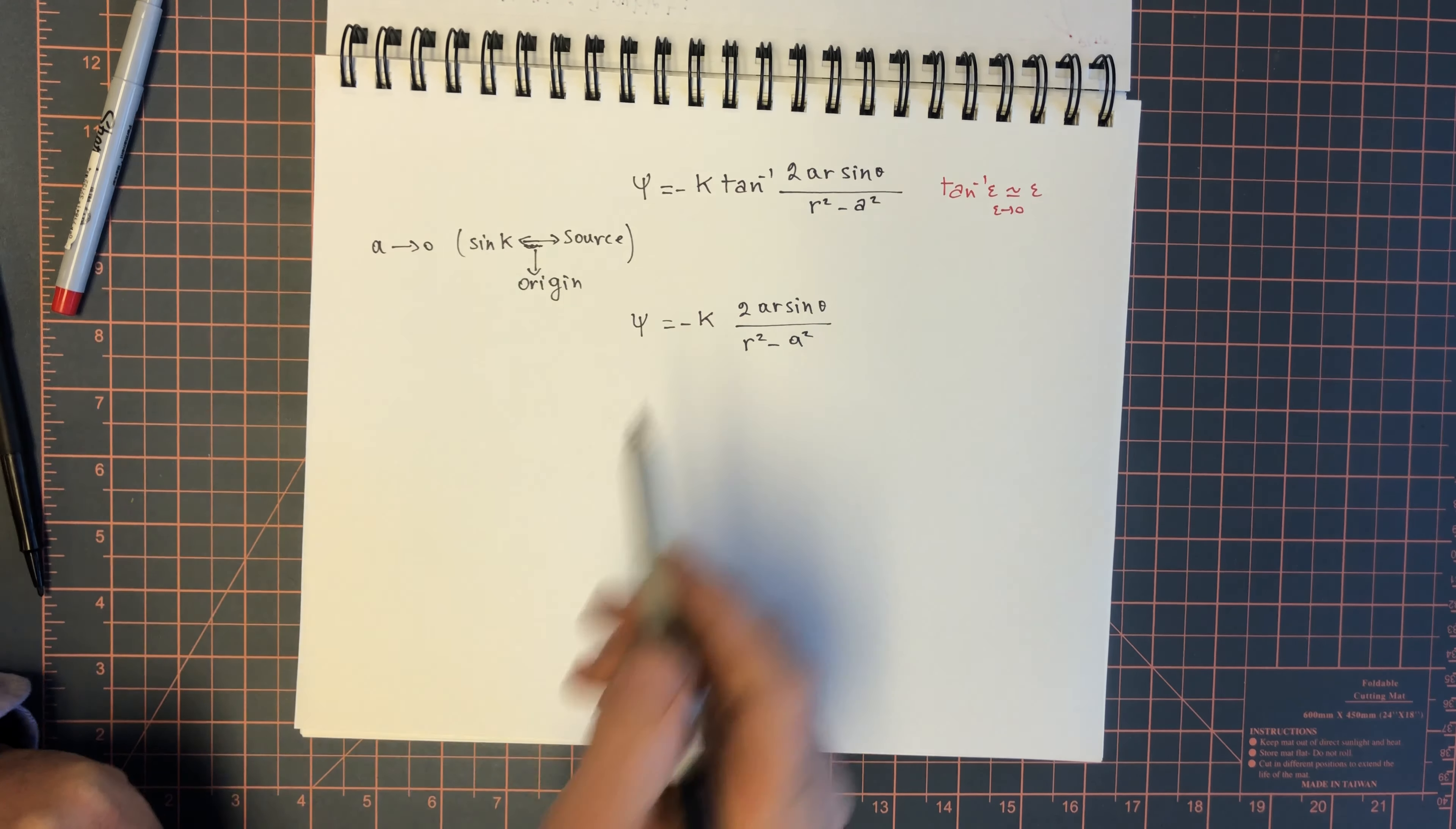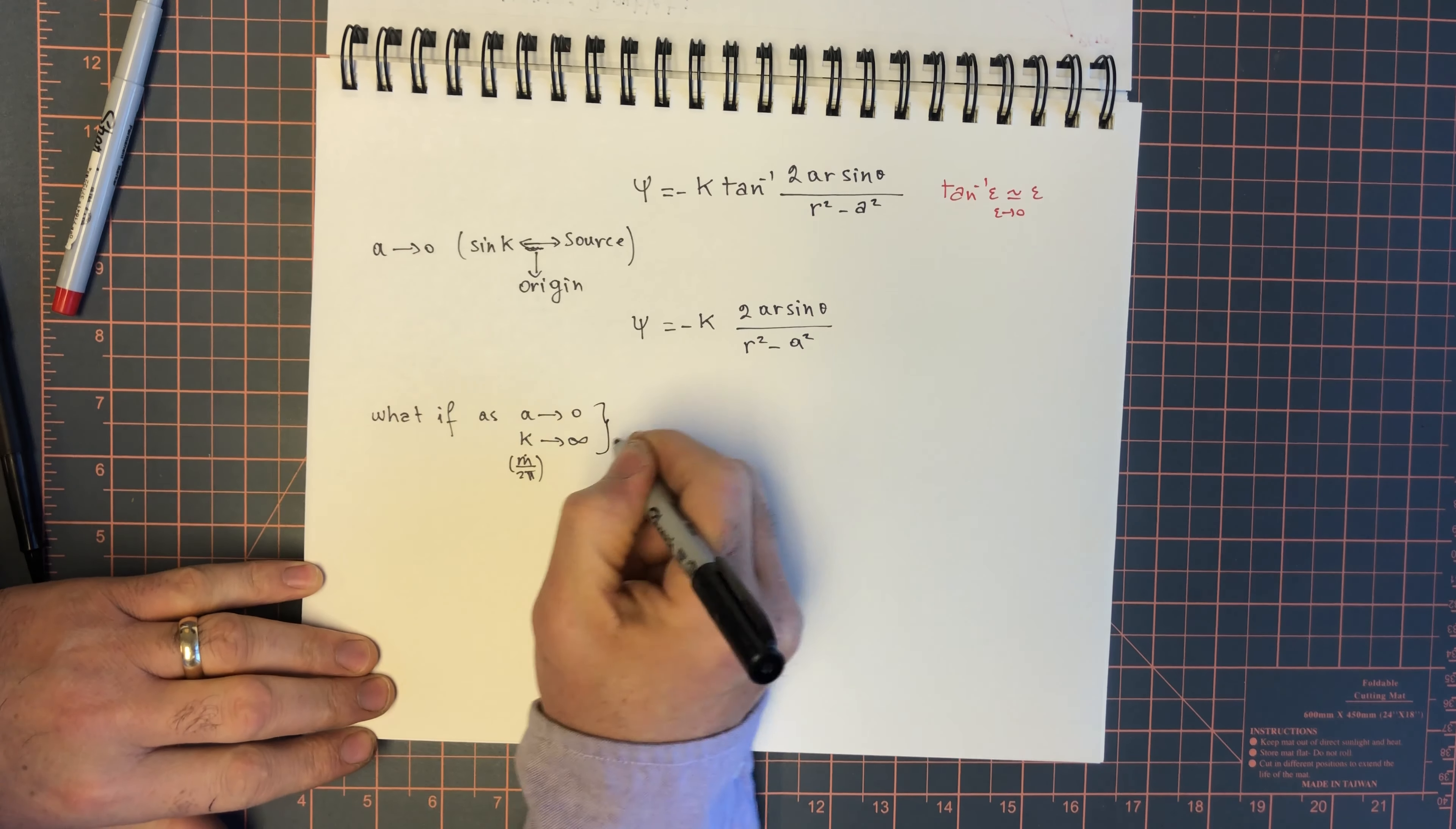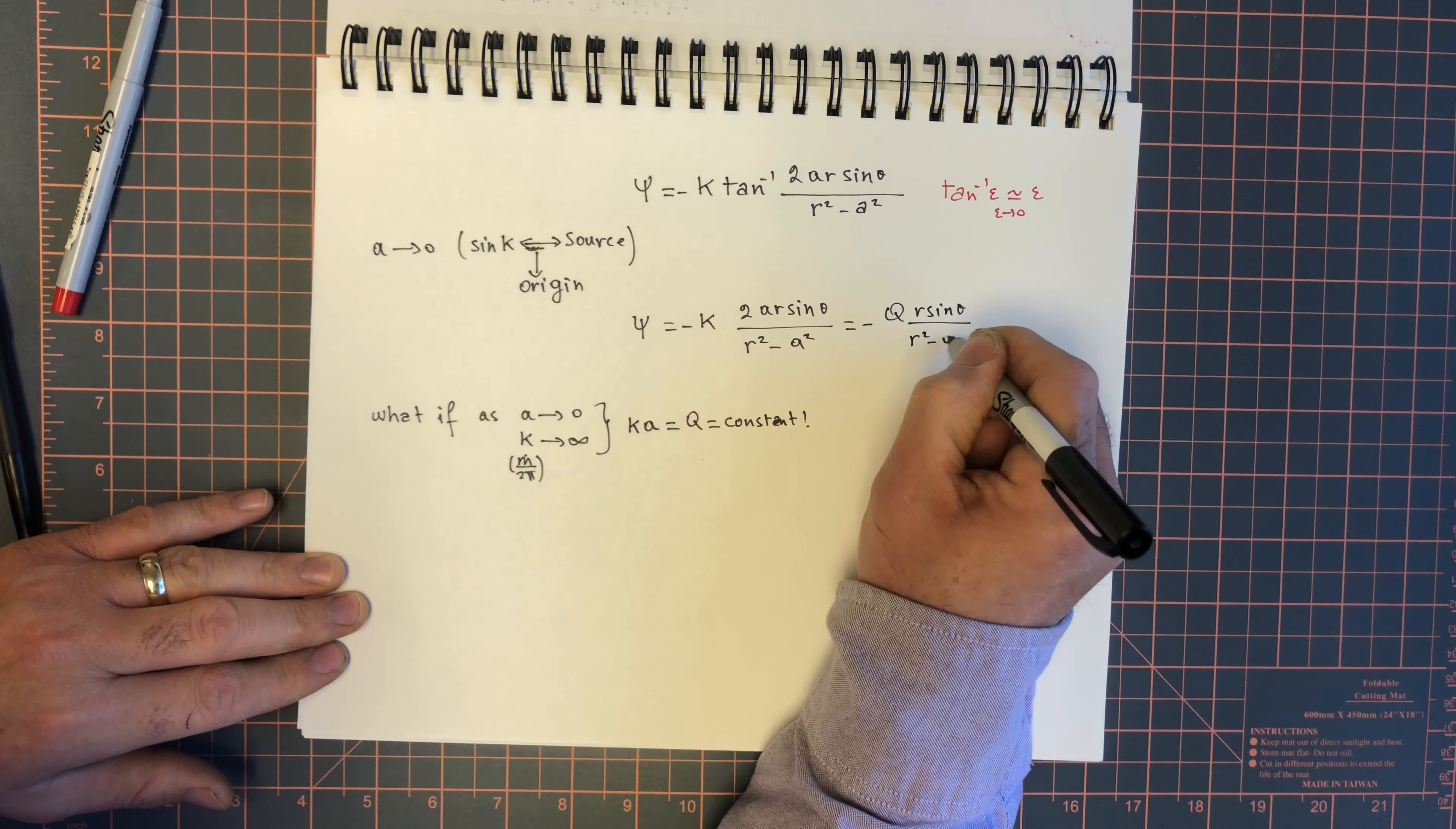Except, what if, as a approaches 0, k approaches infinity? And remember, k was m over 2 pi. So in other words, the source emits an infinite amount of mass, and the sink absorbs an infinite amount of mass. But in a way such that kA is equal to q remains to be a constant. What happens in that case? kA combined, and they give us a q quantity, or 2 kA. So, we're going to call this minus q r sine theta over r squared minus a squared.